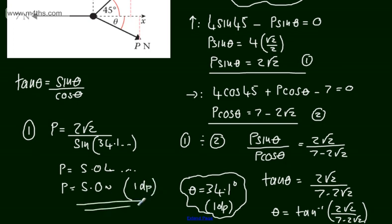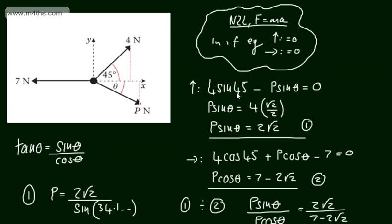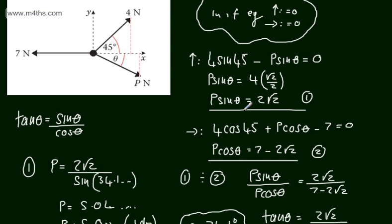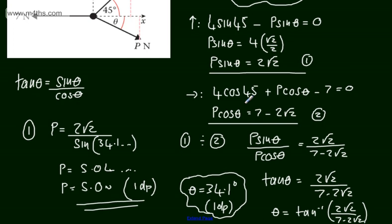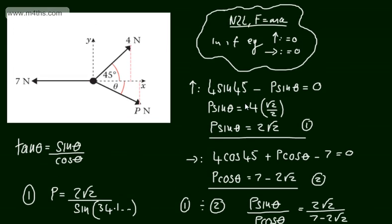We're not asked for a specific level of accuracy, but obviously we can alter that. So solving this problem: given that the particle is in equilibrium, we state the two equilibrium facts, resolve horizontally and vertically to get simultaneous equations, and solve from there. A nice question and a typical example of one of the more challenging ones we might see. Let's move on to another one.